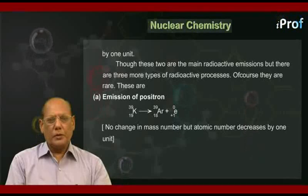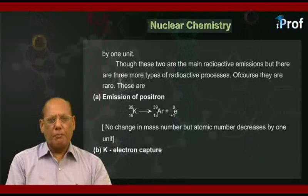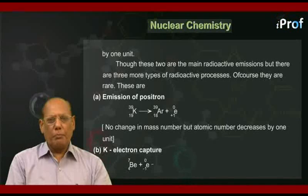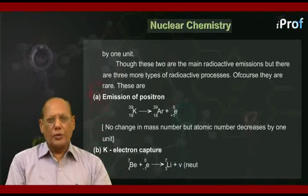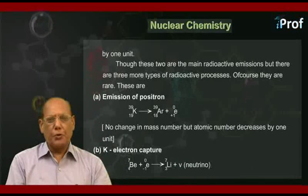Next is (b) K-electron capture. The example is beryllium-4-7 plus e-minus-1-0 changing into lithium-3-7 plus nu, that represents neutrino.